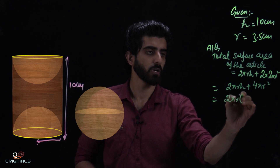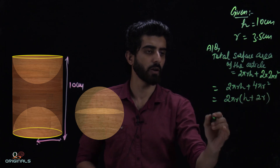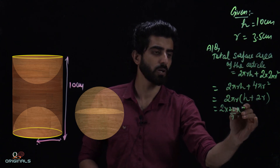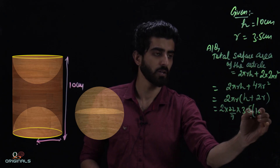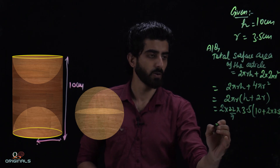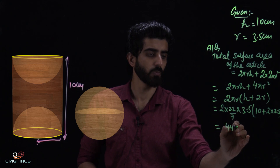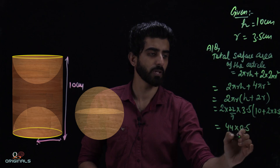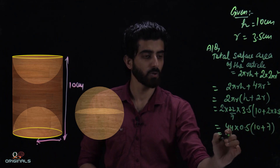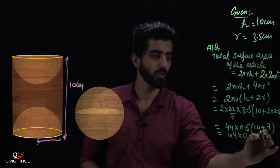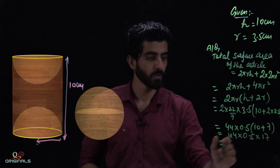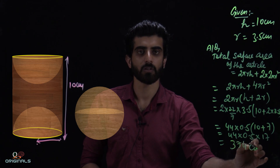Taking 2πr common: total surface area = 2πr(h + 2r). Substituting π = 22/7, r = 3.5 cm, h = 10 cm: = 2 × (22/7) × 3.5 × (10 + 2 × 3.5) = 2 × 22 × 0.5 × (10 + 7) = 44 × 0.5 × 17 = 374 square centimeters.